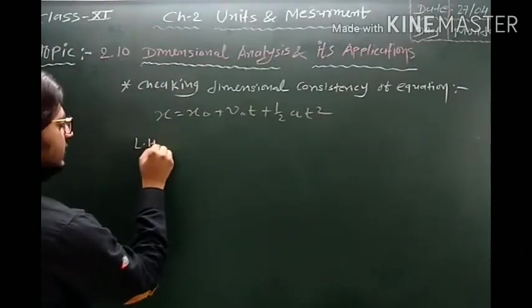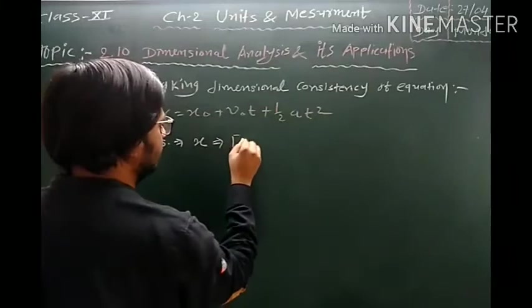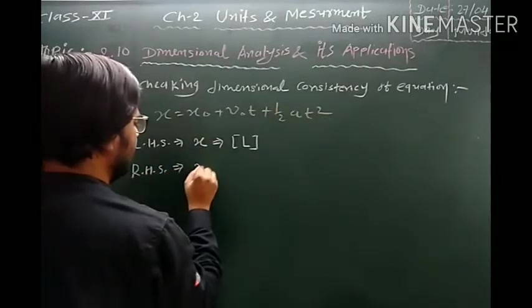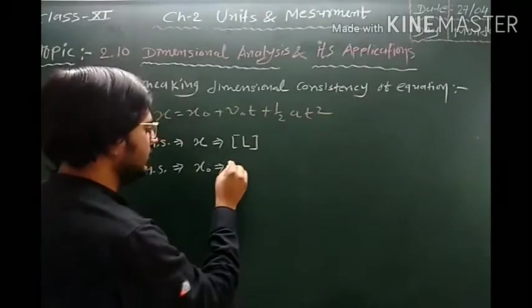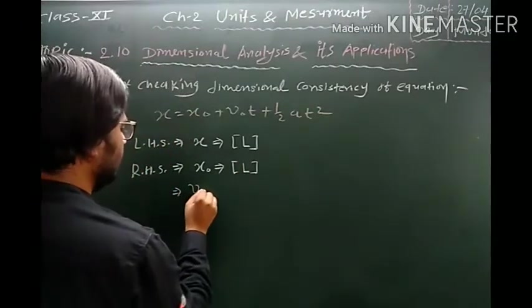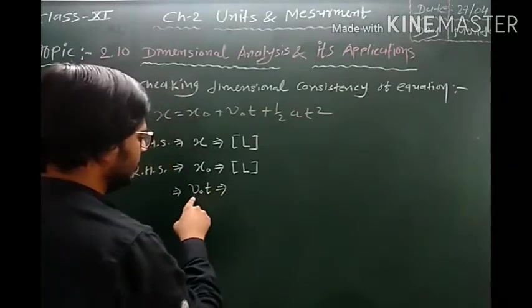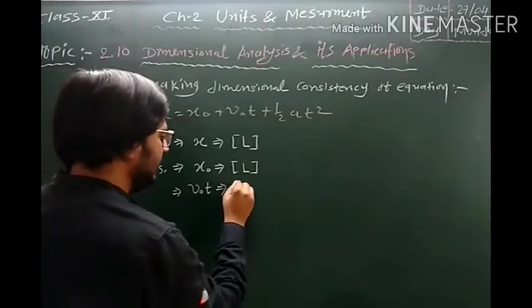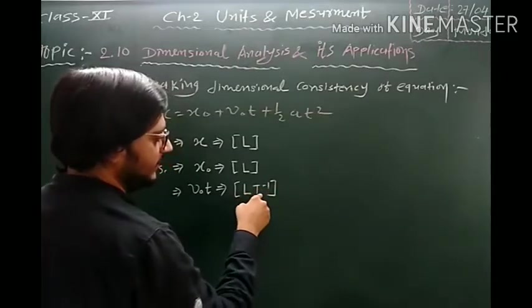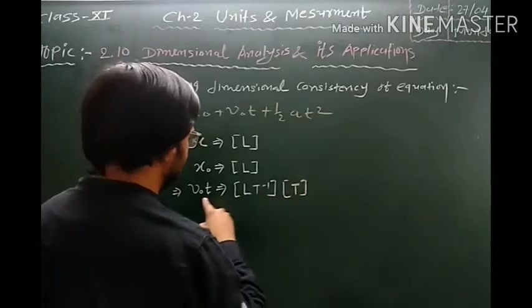The LHS is position x, which is measured in meters, so its dimension is L. On the right-hand side: x₀ is the initial position, measured in meters, so its dimension is L. For the term v₀T: v₀ is the initial velocity measured in meter per second, so its dimension is L·T⁻¹. Time T is measured in seconds, so its dimension is T.